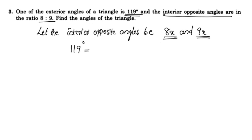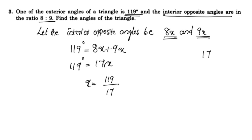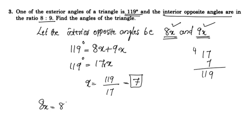The exterior angle of a triangle equals the sum of its two interior opposite angles. So 8x plus 9x equals 110 degrees. That gives 17x equals 110, so x equals approximately 7. One angle is 8x equals 56 degrees.